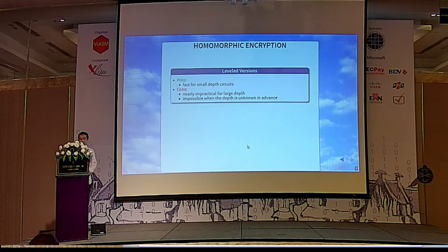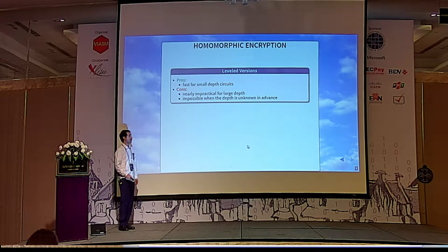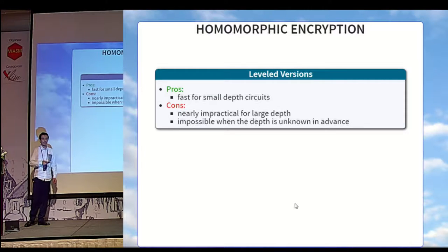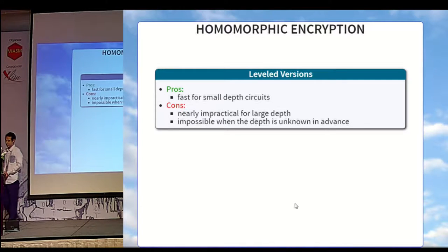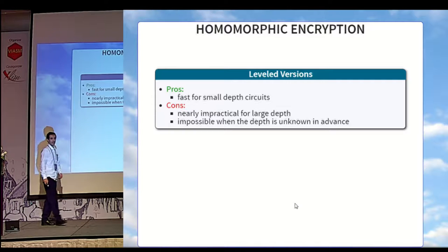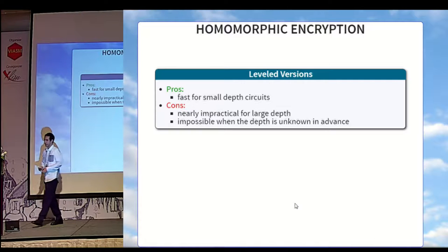Against this noise problem, there are two classical techniques. The first one is leveled encryption — you choose the parameters of the system large enough so that after the last gate, the plaintext is still decryptable. It is very good for small depth circuits, but it becomes totally impossible if the depth is unknown in advance, like if you want to encrypt a dynamic database on the cloud.